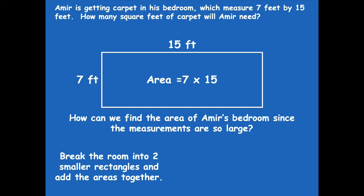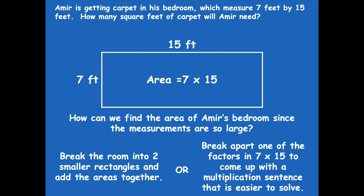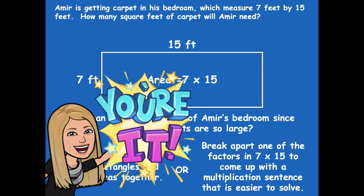We could break the room into two smaller rectangles and add the areas together — we've learned how to do that. Or we could break apart one of the factors in 7 times 15 using the distributive property to come up with a multiplication sentence that's easier to solve. Choose one of these strategies, solve it using that method, and then click play. Are you going to break it into two smaller rectangles and add, or use the distributive property and break apart one of those factors?